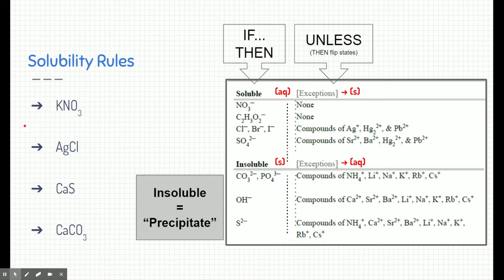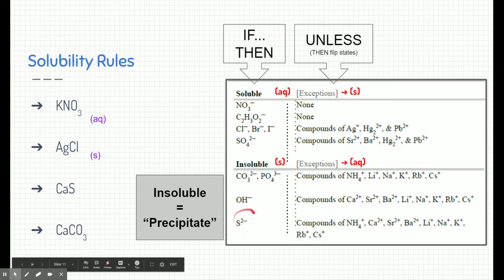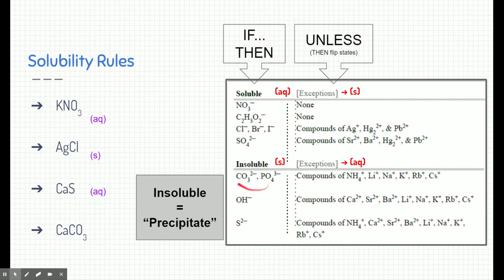Let's look at some examples. KNO₃: I see NO₃ on the soluble side, so this should be soluble — and it is because there are no exceptions regardless of what NO₃ is attached to. AgCl: Cl is on the soluble side, but Ag is an exception, so it flips and becomes insoluble. CaS: sulfur appears on the insoluble side, but Ca is an exception, so it flips and becomes aqueous. CaCO₃: carbonate is on the insoluble side, and calcium is not an exception, so it remains insoluble.